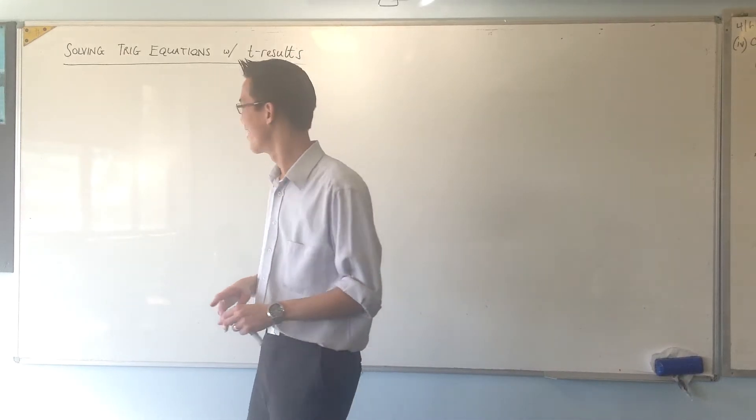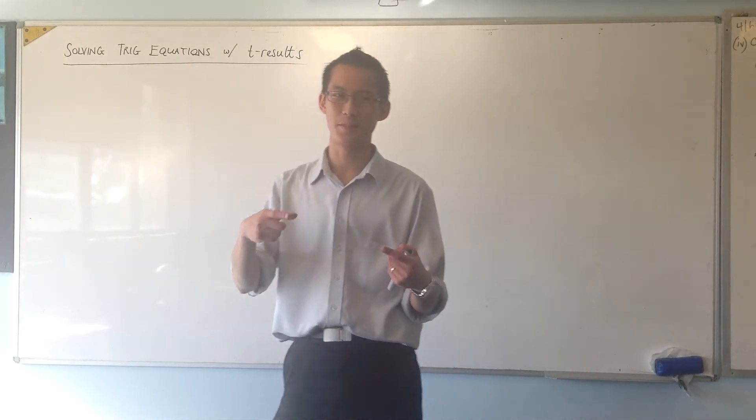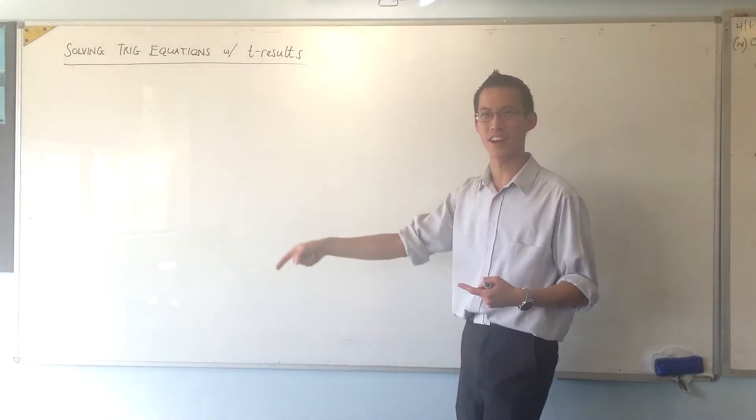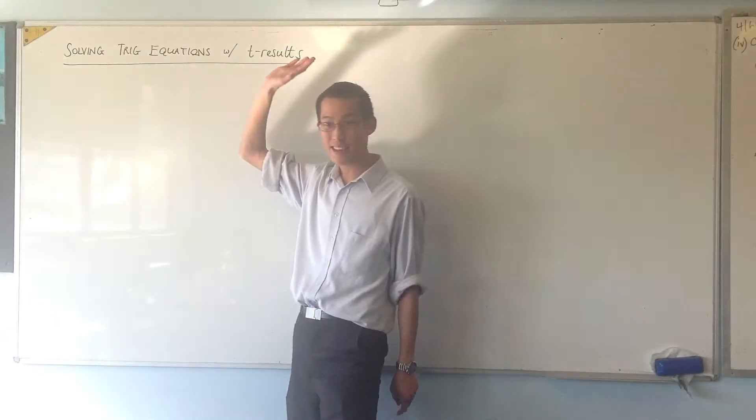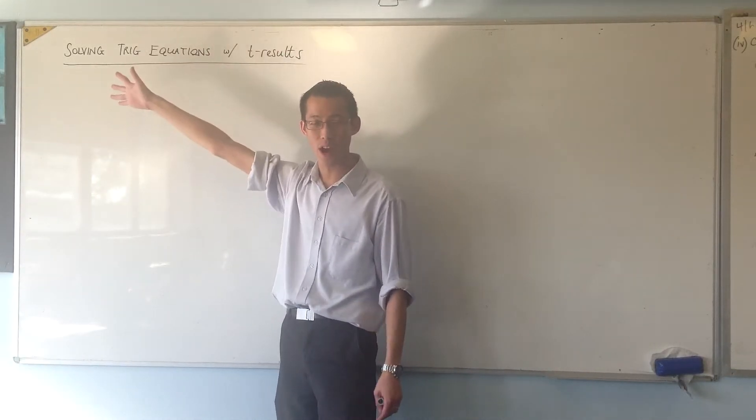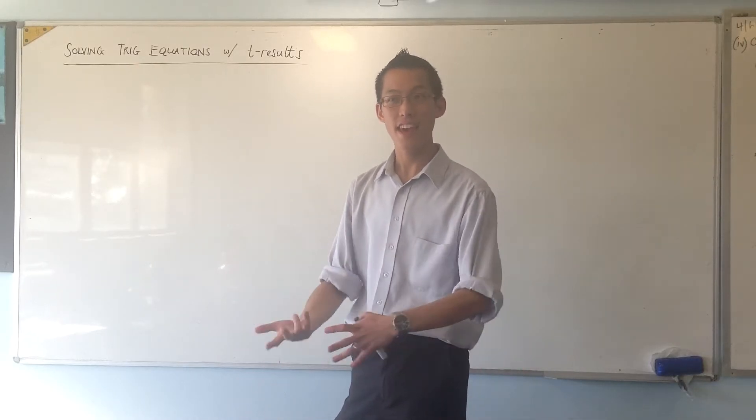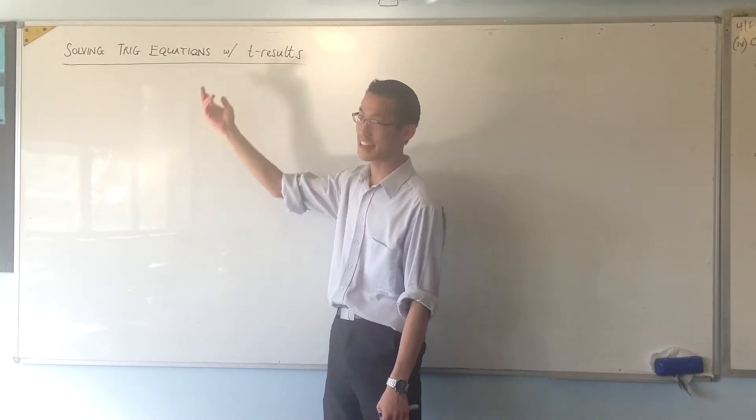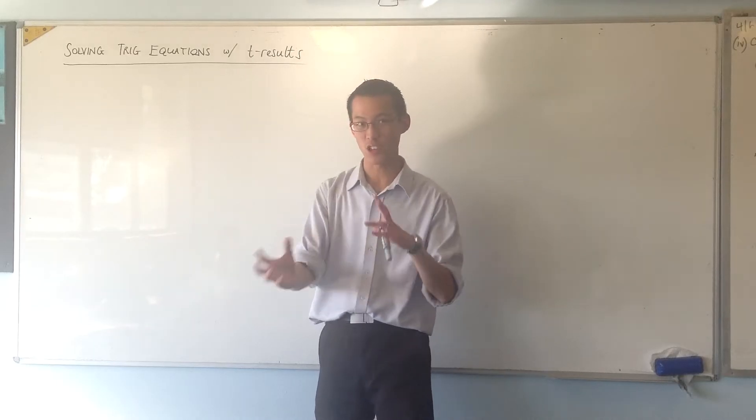I hope you're getting a sense of the order in which I've done things. You remember, we looked at basic identities, basic equations, then I showed you the T results. And then I showed you T results with the identities and identities with that, right? So you can compare.